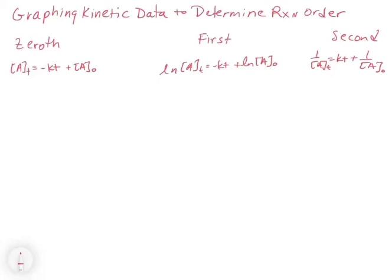In this video we're going to look at how we can graph kinetic data to determine reaction order and to determine the rate constant. What I've written is the integrated rate laws for the zeroth, first, and second order equations. We're going to start with these because each one is an equation and we can create a linear equation from it. Remember a linear equation has a general form of y equals mx plus b.